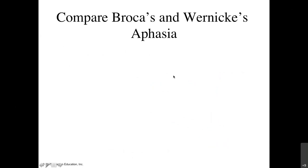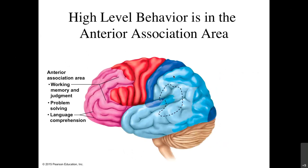Let's talk about a few other brain regions. In your frontal lobe, not only do you have motor output, but you also have the anterior association area — the prefrontal cortex — where we have complicated tasks that make us human: working memory, judgment, problem-solving skills, and language comprehension. This is the last area of the brain to develop. For women it develops around 18–20, and for men that region doesn't fully develop until 23–25.